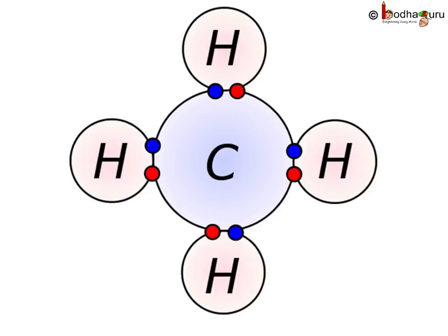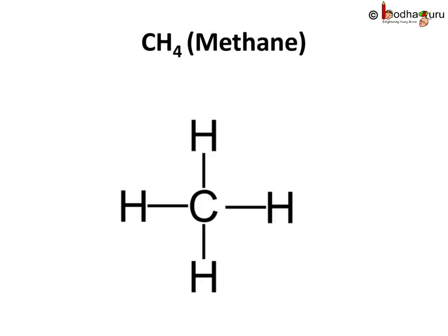Let's start with the simplest organic compound, methane, which is CH4. Here, one carbon atom forms 4 single covalent bonds with 4 hydrogen atoms to achieve 8 valence electrons, and thus we get CH4, which is methane.